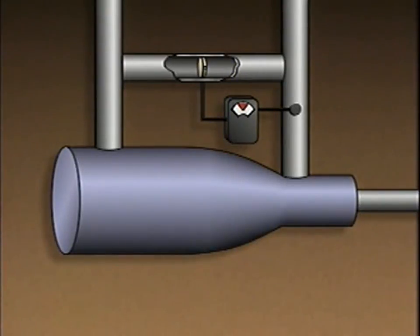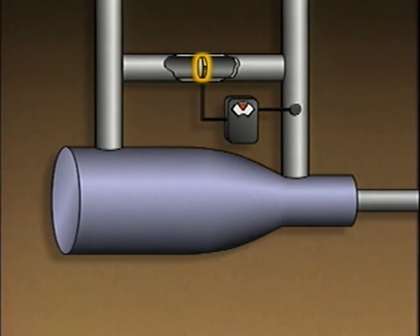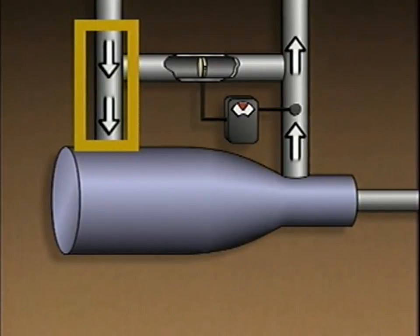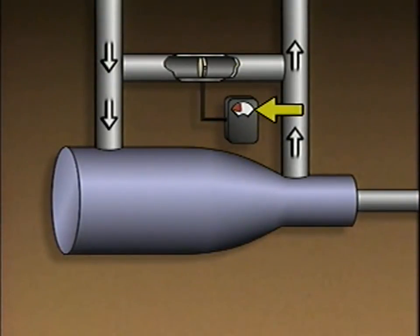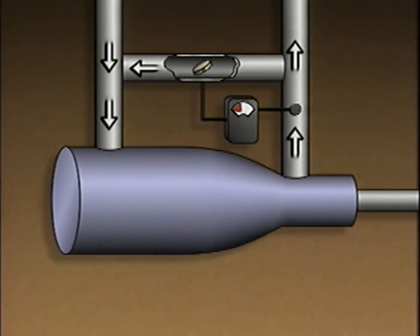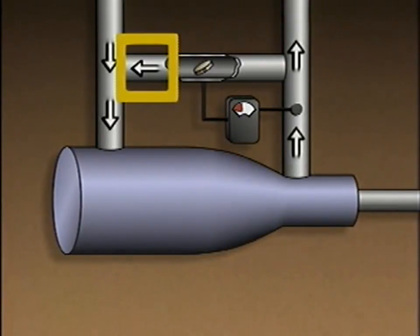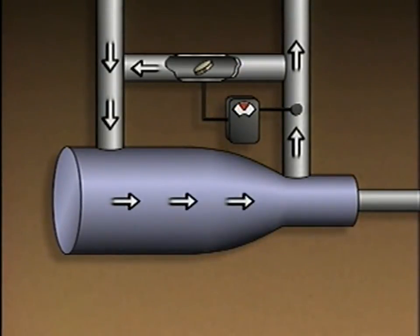This simplified illustration represents an axial compressor with a common type of surge control system. The control system consists of a flow sensor in the compressor's discharge piping, a flow controller, and a recirculation valve located in a section of piping between the suction piping and the discharge piping. When low demand causes the gas flow rate to approach the surge point, the flow sensor sends a signal to the flow controller. The controller then opens the recirculation valve and routes a portion of the discharge gas flow back into the suction piping, so the gas flow through the compressor increases and stays above the surge point.